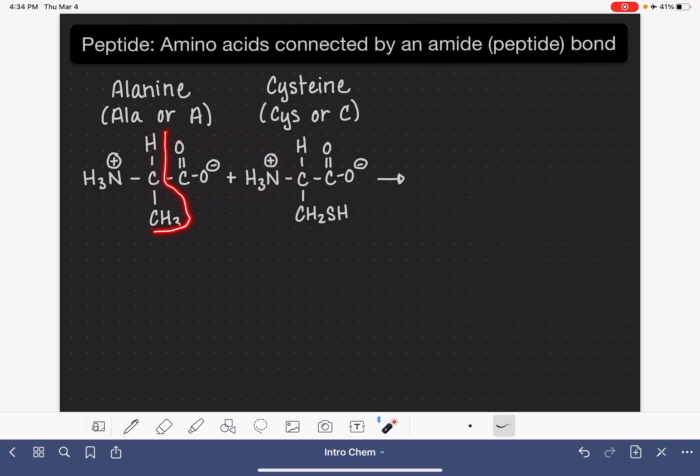I'm going to begin by drawing just this much of my first amino acid because this portion won't be affected. I'll draw it down here: H3N+ CHCH3.